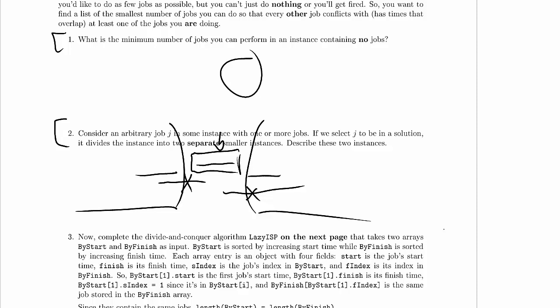the optimal solution to the left side, which we can compute independently of the right, plus the optimal solution of the right side, which we can compute independently of the left, plus job J itself is an optimal solution to the overall problem and that is crucial for divide and conquer.